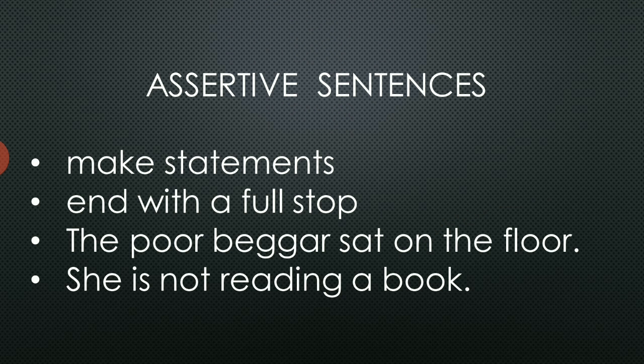The structure of affirmative sentences is subject plus predicate. For example, 'The poor beggar sat on the floor' — 'the poor beggar' is the subject, 'sat on the floor' is the predicate. For a negative sentence, the structure is: subject plus helping verb plus not plus main verb plus object. For example, 'She is not reading a book' — 'she' is the subject, 'is' is the helping verb, 'not' follows, 'reading' is the main verb, and 'a book' is the object. So assertive sentences consist of affirmative as well as negative sentences.